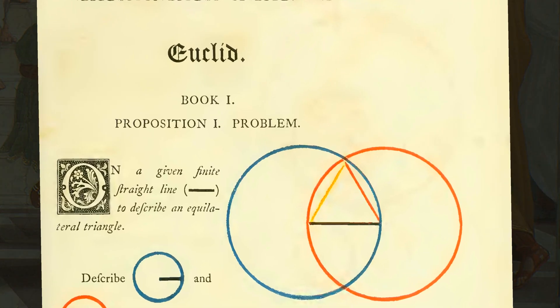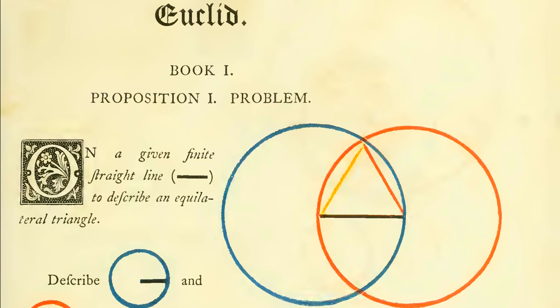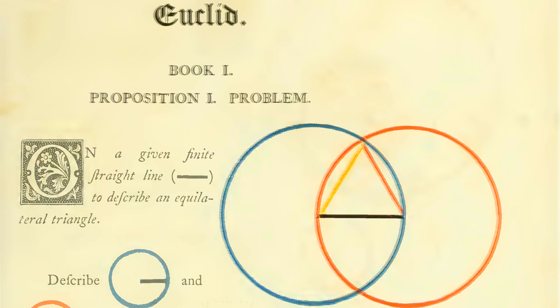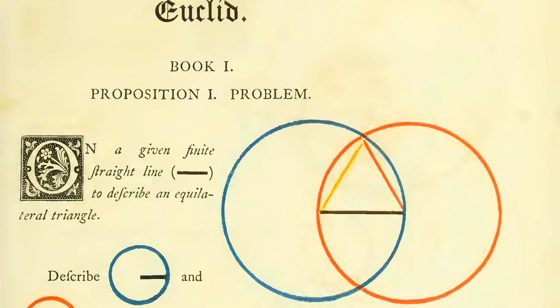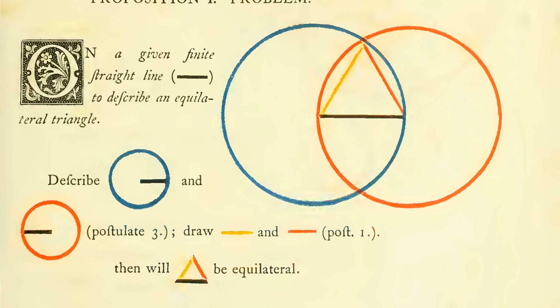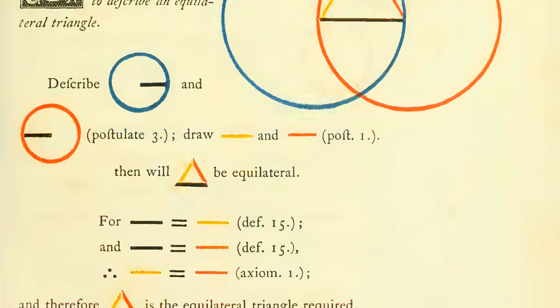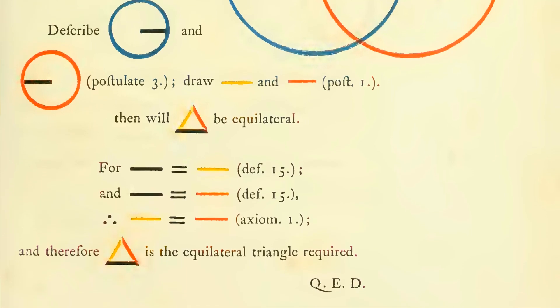Proposition 1 is one of many examples demonstrating where some of Euclid's proofs fell short. We're given a line segment and need to figure out how to draw the other sides to build an equilateral triangle. Euclid's proof for Proposition 1 is beautiful, but when you look at it with modern standards, there are gaps in his reasoning. Let's review his proof first.